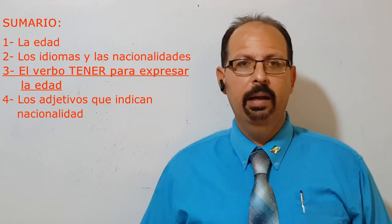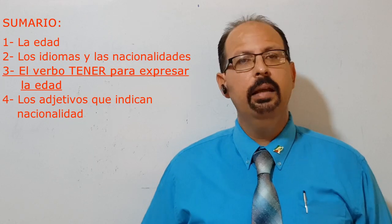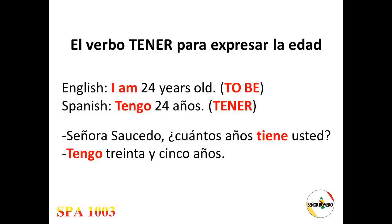The age in Spanish — la edad en español. In English you would say 'I am 24 years old.' In Spanish, what we actually say is 'I have 24 years.' Tengo does not mean 'I am.' Tengo means 'I have.'